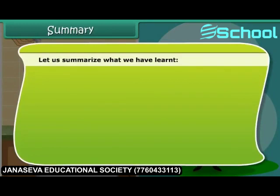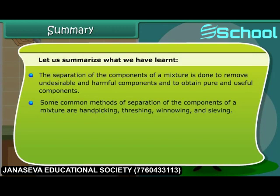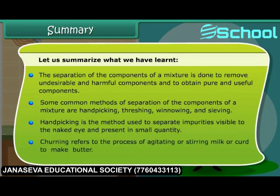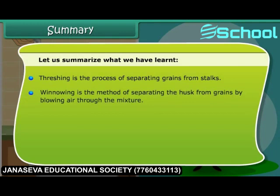Let us summarize what we have learned. The separation of the components of a mixture is done to remove undesirable and harmful components and to obtain pure and useful components. Some common methods of separation are hand-picking, threshing, winnowing, and sieving. Hand-picking is used to separate impurities visible to the naked eye and present in small quantity. Churning refers to the process of agitating or stirring milk or curd to make butter. Threshing is the method of separating the husk from grains by allowing air through the mixture. Sieving is the technique of using a sieve to separate solid particles of varying sizes.